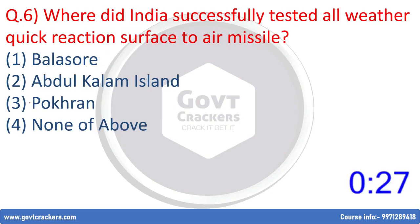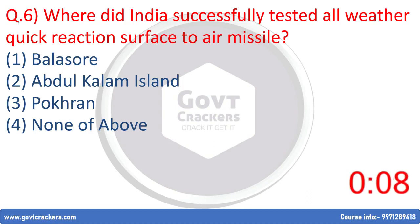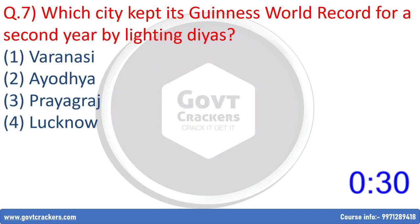Next question: Where did India successfully test the all-weather Quick Reaction Surface-to-Air Missile? Option 1: Balasore, Option 2: Abdul Kalam Island, Option 3: Pokhran, Option 4: None of the above. The correct answer is Balasore. India successfully test-fired the all-weather Quick Reaction Surface-to-Air Missile (QRSAM) air defense system from the Balasore flight test range.